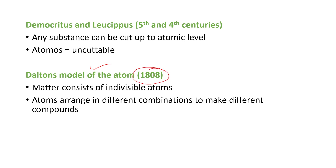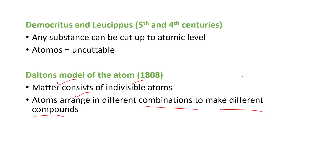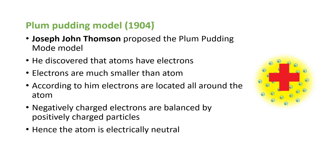Next is Dalton's model of the atom, proposed in the year 1808. According to Dalton, matter consists of indivisible atoms — atoms cannot be divided. Atoms arrange in different combinations to make different compounds; for example, sodium combines with chlorine to form sodium chloride, and carbon combines with oxygen to form carbon dioxide. Similar atoms can also combine, like O2.